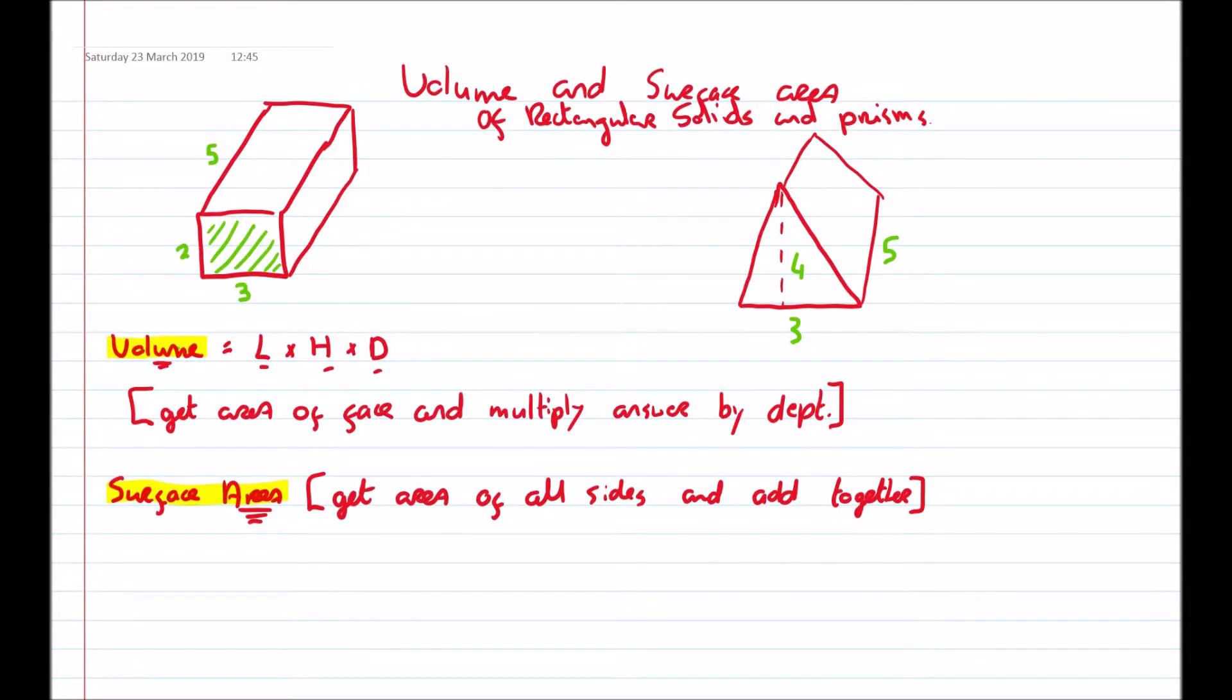I'm going to get the area of the face. The area of the face is 2 multiplied by 3, and that will give me 6. Multiply my answer then by the depth, which is 5. So 6 by 5 will give me 30. And it's volume, so centimeters cubed. So basically, 30 of these centimeters cubed will fit into this object.